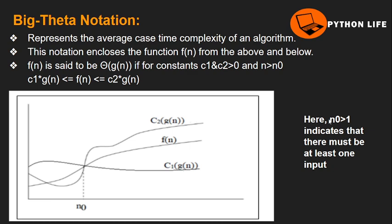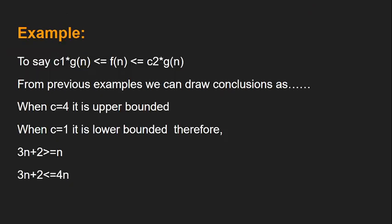Using the previous example for Big Theta: for the lower bound, c₁ = 1 and g(n) = n, giving 3n + 2 ≥ n — satisfied. For the upper bound, c₂ = 4 and g(n) = n, giving 3n + 2 ≤ 4n — satisfied. Therefore, 3n + 2 satisfies both 3n + 2 ≥ n and 3n + 2 ≤ 4n, placing the function in the average case as Big Theta of n.